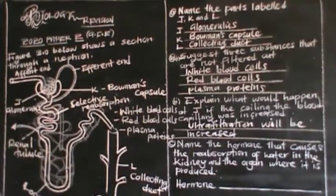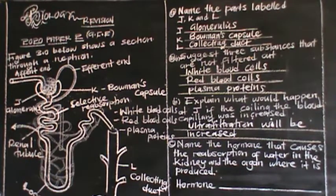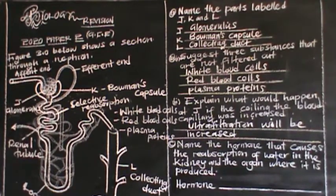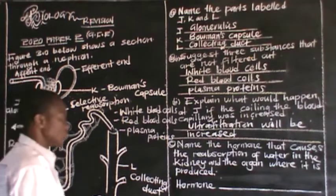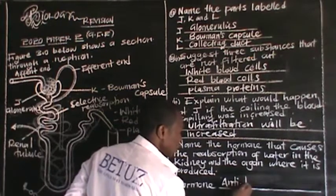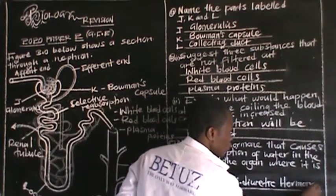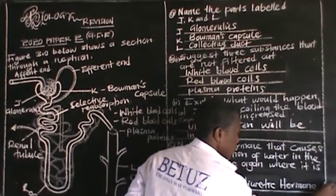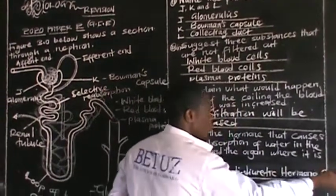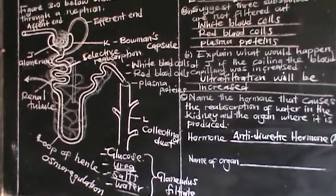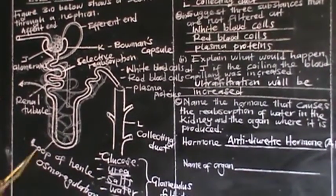They also ask us to name the hormone that causes the reabsorption of water in the kidney and the organ where it is produced. The hormone is called the antidiuretic hormone, abbreviated as ADH. It is also called the vasopressin hormone.